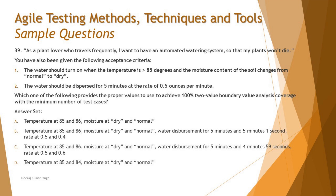Moving on to the next question, which has pretty much the same scenario. We won't waste time re-reading the user story and acceptance criteria — those are exactly the same. The key question at the end is: which one of the following provides the proper values to achieve 100% two-value boundary analysis coverage with the minimum number of test cases?